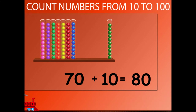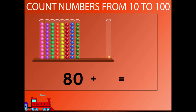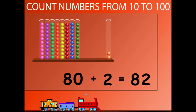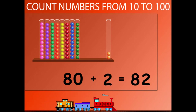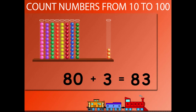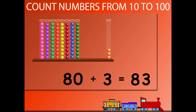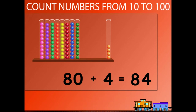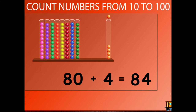70 plus 10 is equal to 80. 80 plus 1 is equal to 81. 80 plus 2 is equal to 82. 80 plus 3 is equal to 83. 80 plus 4 is equal to 84.